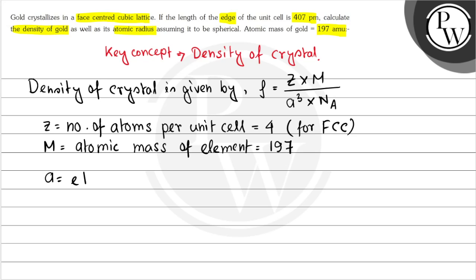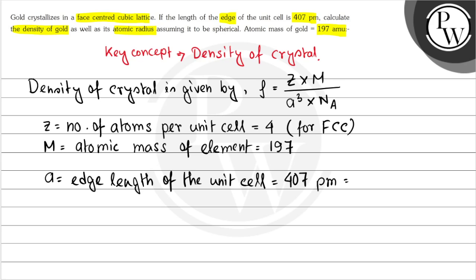A is the edge length of the unit cell, that is given as 407 picometers, which is 407 into 10 to the power minus 10 centimeters. And N is Avogadro's number, that is 6.023 into 10 to the power 23.